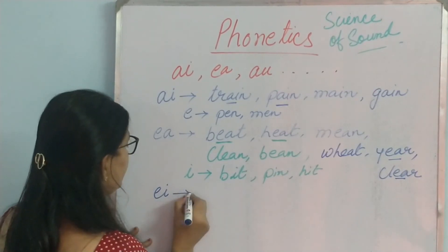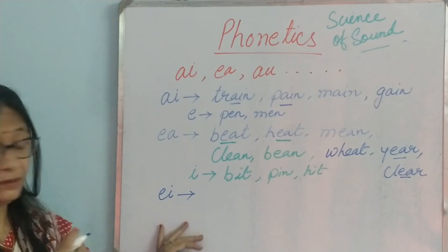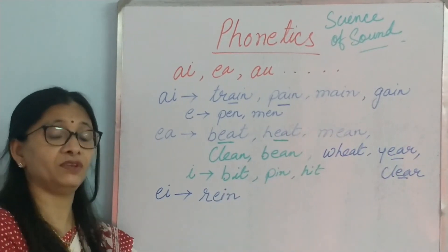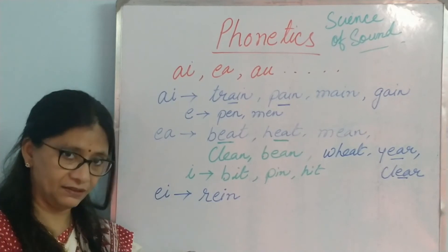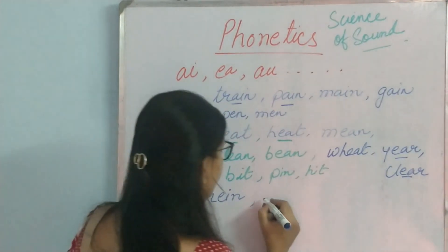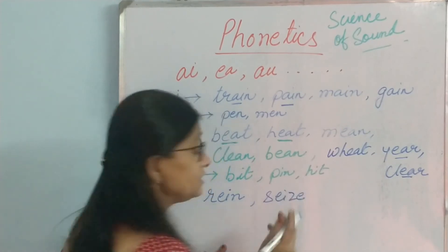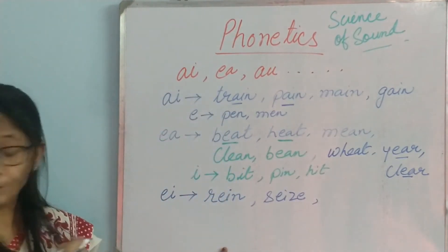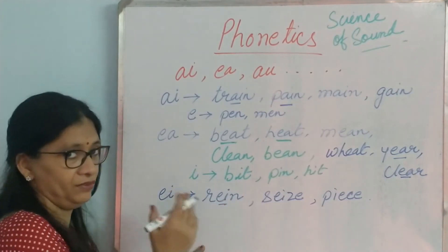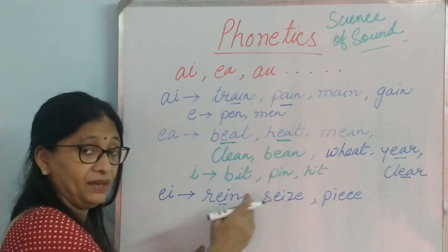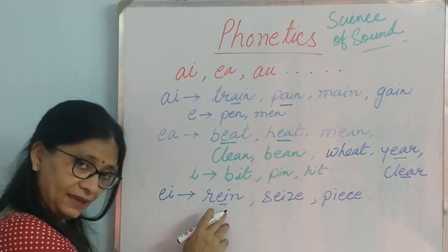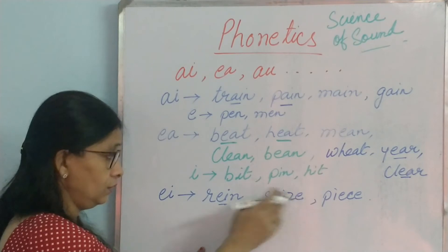Now let us take another combination: EI. Many words have EI in them, like rein — that thing with which we control a horse. Then we have seize, and then peace. So here 'rein' gives an A sound, but 'seize' gives an EE sound, and 'peace' also gives an EE sound. So with EI we get a long A sound in some words, and a long E sound in others.